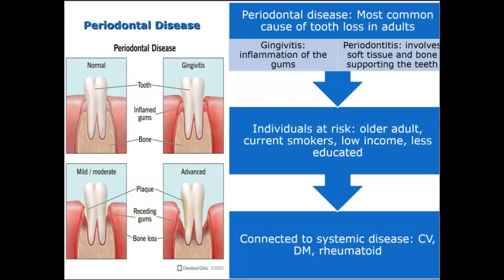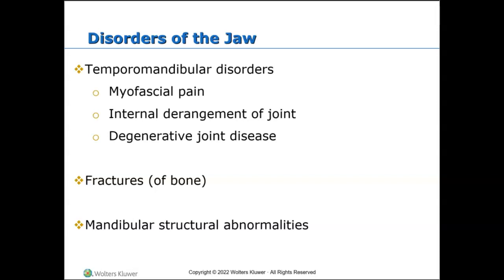Degenerative joint disease, or osteoarthritis, is a type of arthritis that occurs when flexible tissue at the end of bones wears down. This wearing down occurs gradually and worsens over time. Joint pain in the hands, neck, lower back, knees, or hips is the most common symptom. Medications, physical therapy, and sometimes surgery can help reduce pain and maintain joint movement.